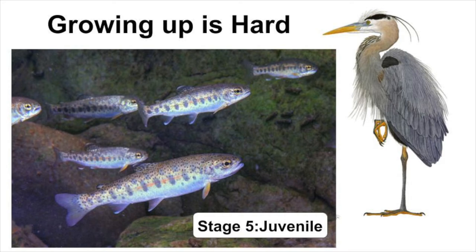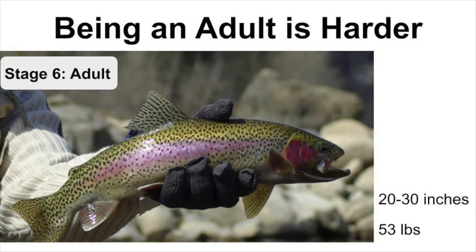As a juvenile, a trout resembles an adult, but is smaller. During the juvenile stage, trout are not old enough or large enough to spawn or have babies. In the adult stage, female and male rainbow trout spawn in autumn. Trout turn vibrant in color during spawning and then lay eggs in fish nests or redds in the gravel.